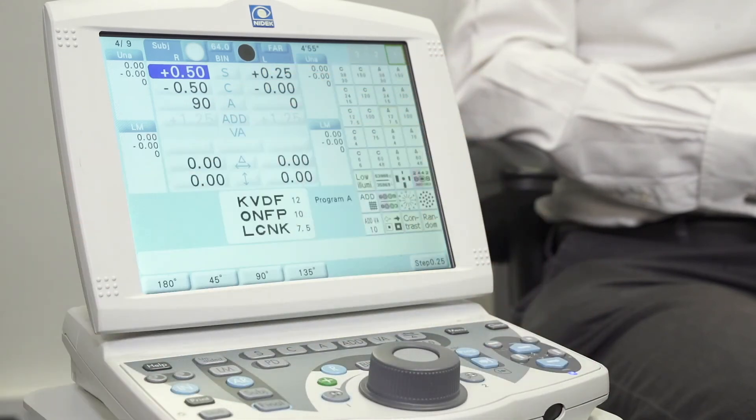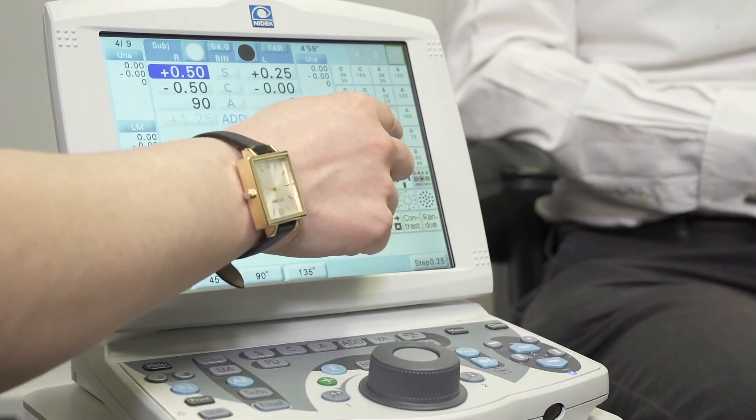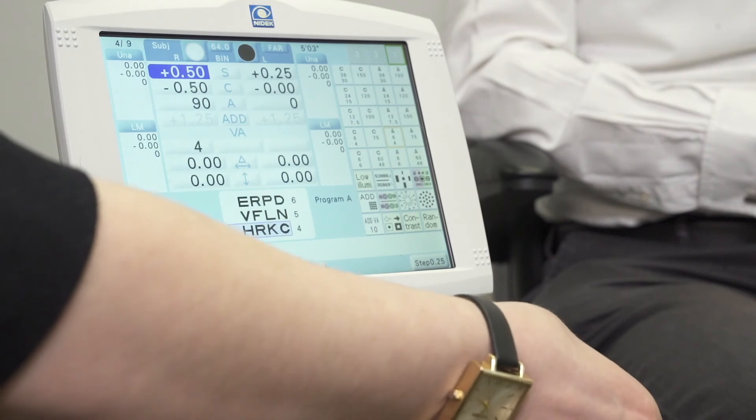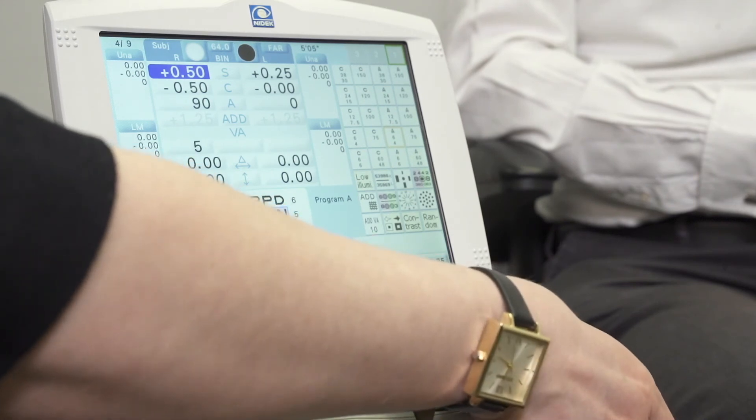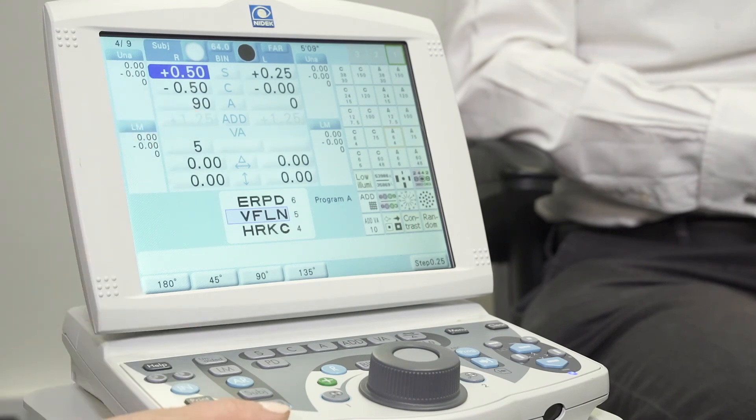Finally, we can come back to the letters, hopefully improving on what we had initially and getting the patient to read a little bit further down the chart. Selecting individual lines using the arrows just here will record as a VA just here. Once we're happy with the first eye, we can move over to the other eye and repeat the process.